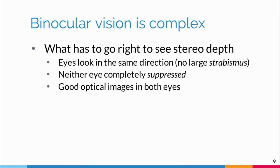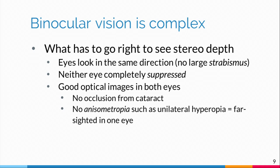You need good optical images in both eyes — no occlusion from cataract or other conditions. You also don't want anisometropia, a term used in optometry and ophthalmology meaning not having the same focus power in both eyes. The most common cause of binocular vision problems is unilateral hyperopia — being farsighted in one eye. It's a very common cause of both strabismus and lack of stereo vision, and it's quite common to be farsighted in just one eye.